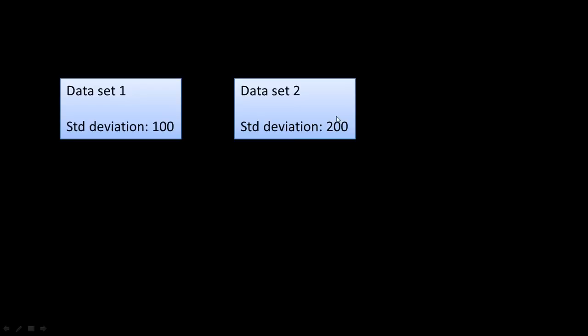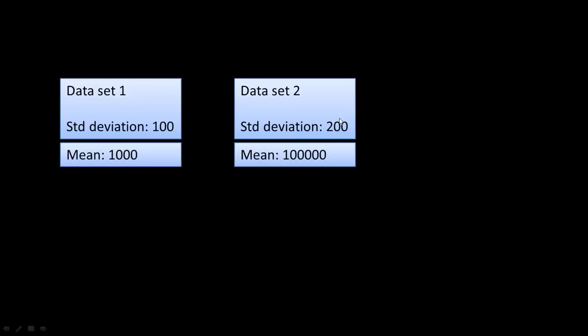Let's say we have two datasets: one with a standard deviation of 100, another with a standard deviation of 200. Which of these has higher variability? This is a trick question. The one with SD=200 seems to have higher variability, but we must look at variance in the context of the underlying population values. If the first dataset has a mean of 1000, its SD is 10% of the mean, whereas the second dataset has a mean of 100,000 with SD=200 — much less than 1%. The first dataset actually has far greater variability.